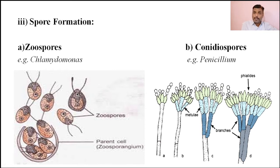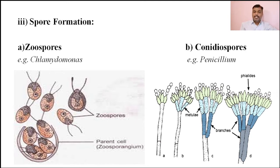Zoospores are spores produced in organisms like Chlamydomonas. In these organisms, the spores produced are motile — they can move themselves from one place to another. Therefore they are called motile spores. Zoospores are generally motile spores that can swim in water and develop into separate individual plants.